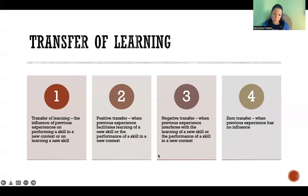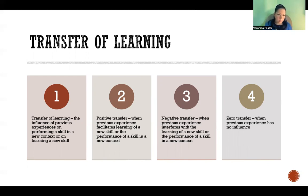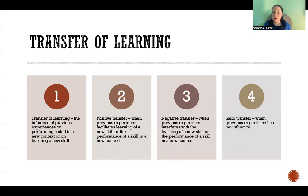A few terms: transfer of learning is the influence of previous experiences on performing a skill in a new context or on learning a new skill. What we've learned before can have a positive effect, a negative effect, or no effect at all. Positive transfer is when previous experience facilitates learning or transferring a skill to a new environment. Negative transfer is when previous experience interferes with learning or transferring to a new environment. Zero transfer means there was no effect.